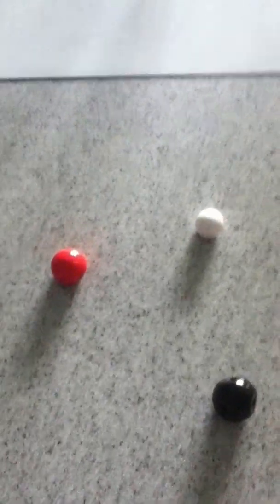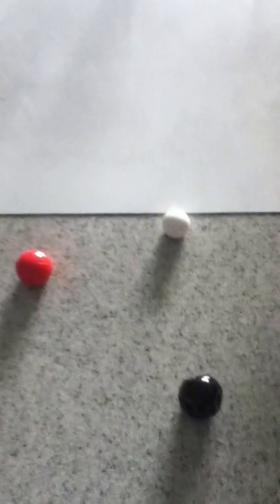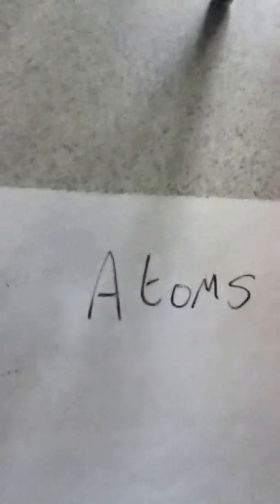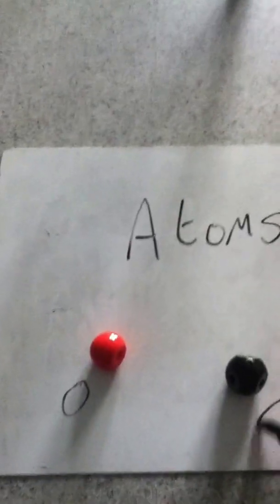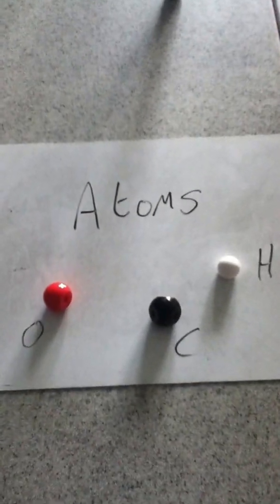Now, what we could do from there is we could start putting on some really good scientific language. So take group one where we've just got some molly mods that are on their own. These will be described as atoms. So here we've got three atoms and actually we could name them. The red ones are oxygen, the black ones are carbon and the white ones are hydrogen. So we've got three atoms there.